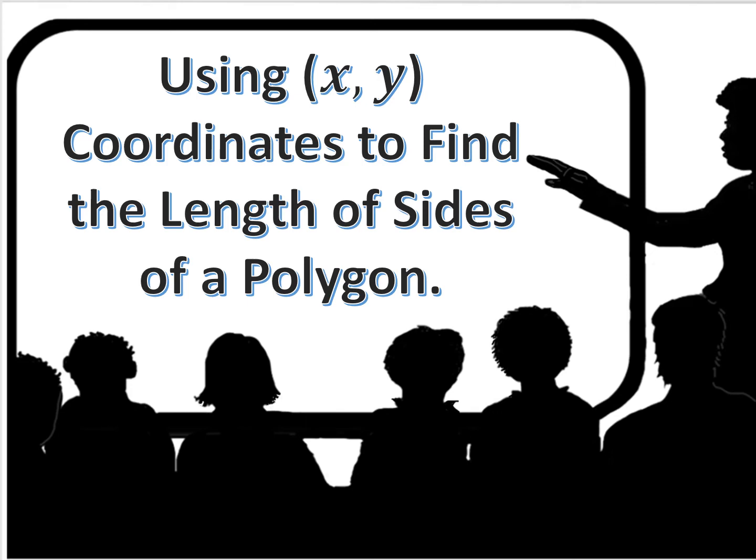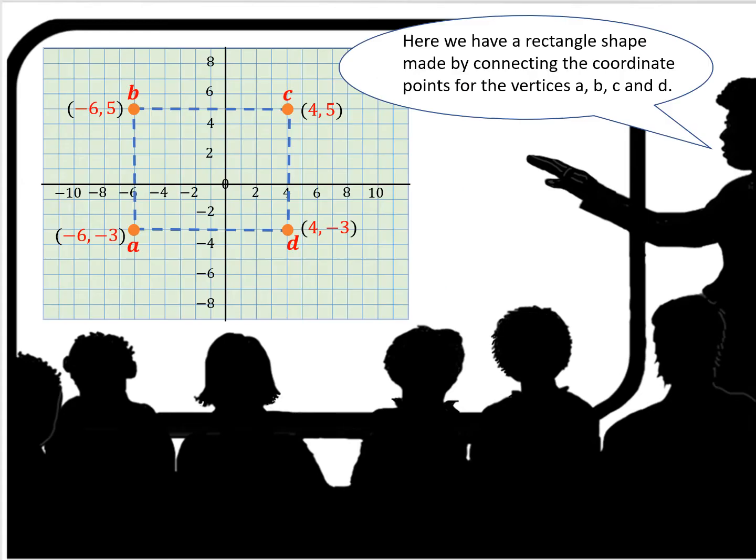This video is on using XY coordinates to find the length of sides of a polygon. Here we have a rectangle shape made by connecting the coordinate points for the vertices A, B, C, and D. You see that B is located at negative 6, 5. You see that C is at 4, 5, etc.